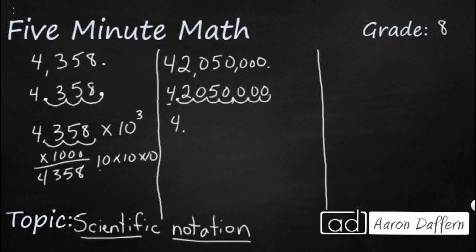Which means it's going to be 4.205 times 10, and then how many times you moved over—10 to the seventh.